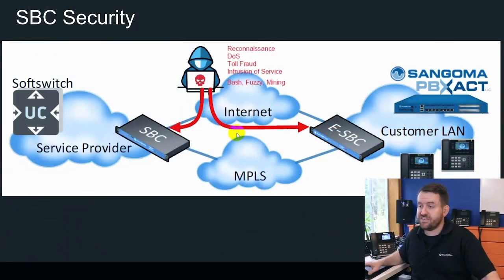Imagine that you had a web server running on port 80 internally on your LAN. You would never want to simply port forward all external requests on port 80 to that web server. You would want to protect it with a firewall that can provide an extra layer of protection that defends against denial of service attacks and provides intrusion detection, among other things. So an SBC can protect your SIP PBX against similar types of DOS and DDOS attacks.